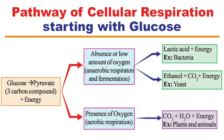Look at the flow chart on the screen. After oxidation of glucose, pyruvic acid plus energy is produced. Pyruvic acid or pyruvate contains 3 carbon atoms. If oxygen is not available — anaerobic respiration or fermentation — in bacteria lactic acid plus energy is produced; in yeast ethanol plus carbon dioxide plus energy is released. If oxygen is available, that is aerobic respiration, and carbon dioxide, water, and energy are released. This process takes place in plants and animals.